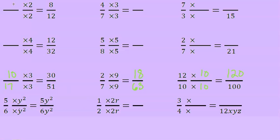And let's look at the bottom part. Now we're going to multiply by a variable. We have five times y squared—that's five y squared. Six times y squared is six y squared. One times two r is two r. Two times two r is four r. Four times something equals twelve xyz. That would be three xyz. So three times three xyz is nine xyz.